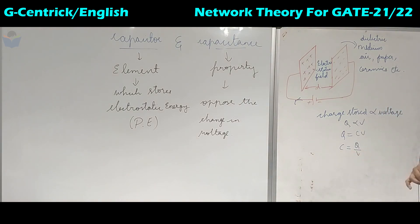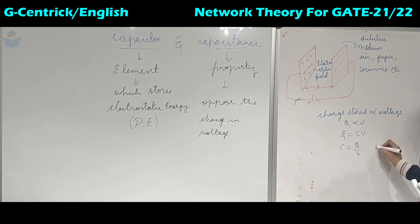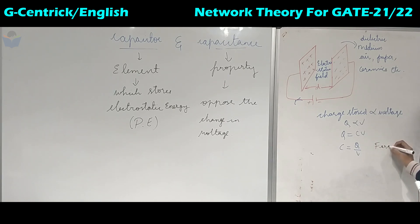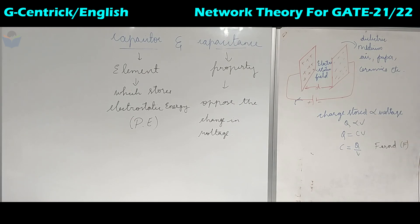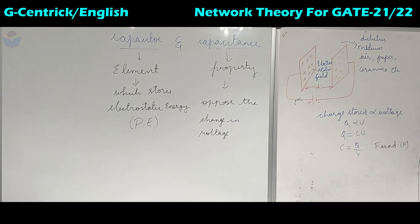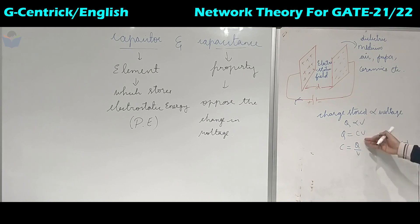The unit of capacitance C is named after the scientist Michael Faraday and represented as capital F. So the formula for capacitance is C equals Q by V.